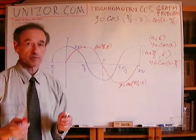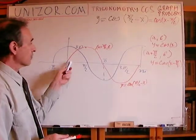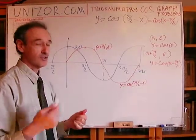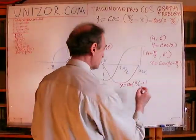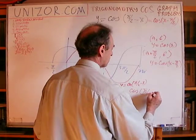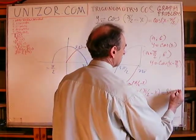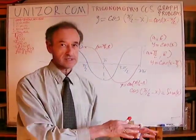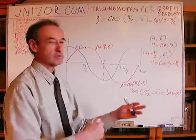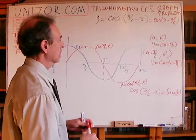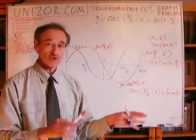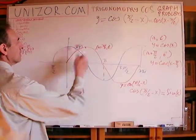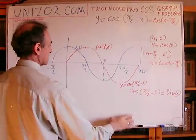If you remember the previous lecture about sine, this shifted graph is exactly the graph of sine. So you can sense that cosine of (π/2 − x) equals sine of x. This is indeed true, and I will discuss this relationship between trigonometric functions in a separate lecture. For now, let's just note it as an observation — the red line is the graph of this function.